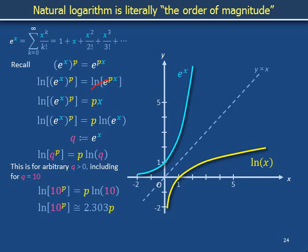10 to the p is a number whose order of magnitude is called p. That's what we mean by order of magnitude. We mean the power attached to the base 10. Usually it's reported rounded to the nearest integer. Other than a factor of about 2.3, applying the natural logarithm to the number 10 to the p spits out its order of magnitude p. The natural logarithm can be interpreted as the function that provides order of magnitude.